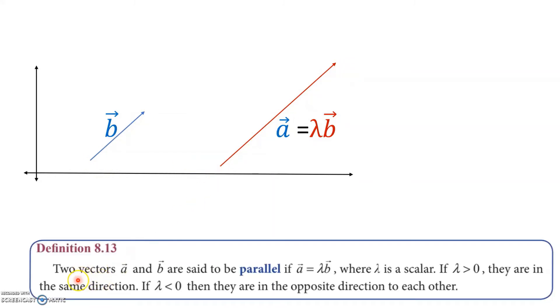Two vectors a and b are said to be parallel if vector a equals λb, where λ is a scalar. If λ is greater than zero, then this will be in the same direction as b.